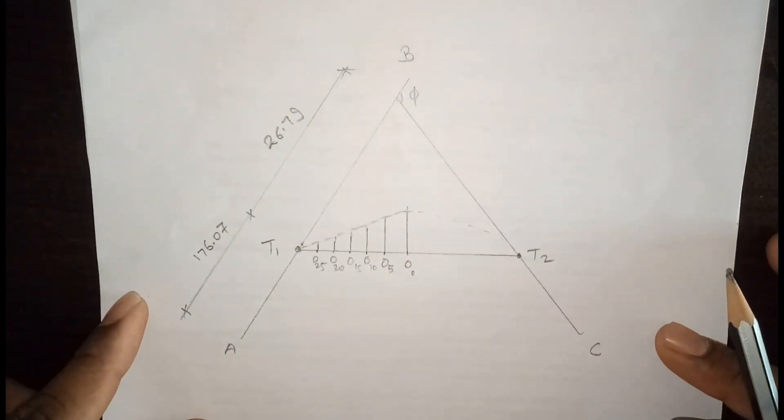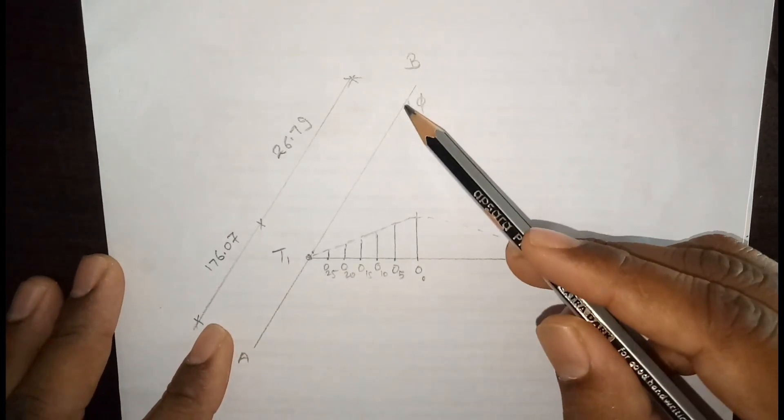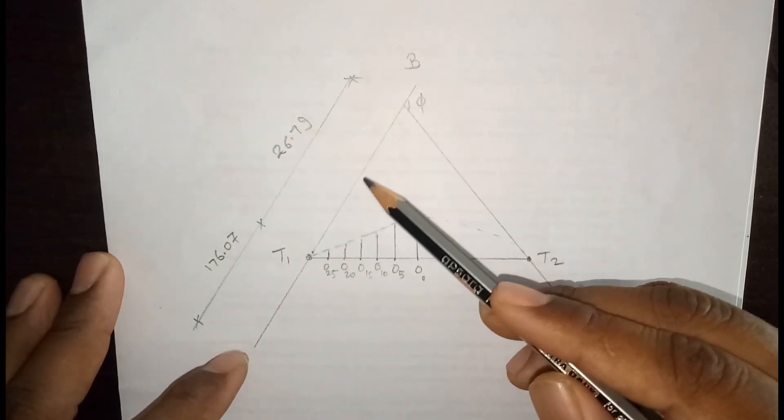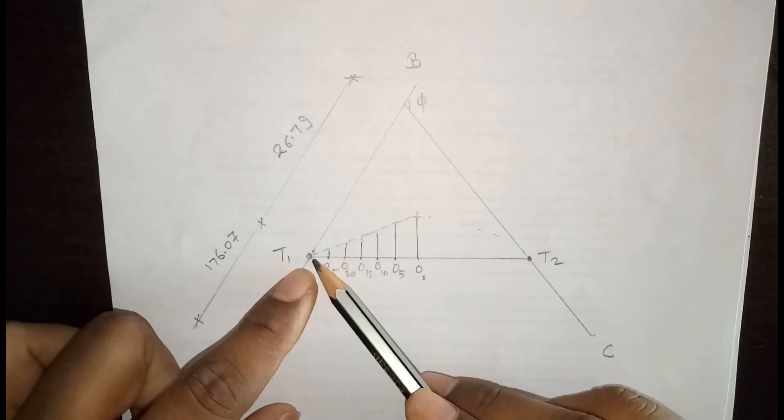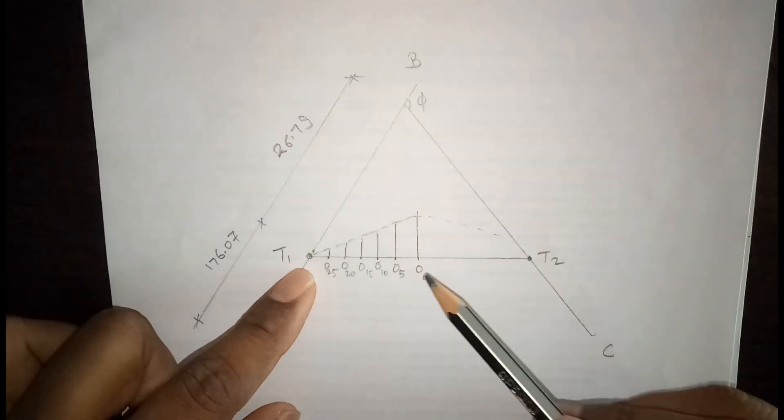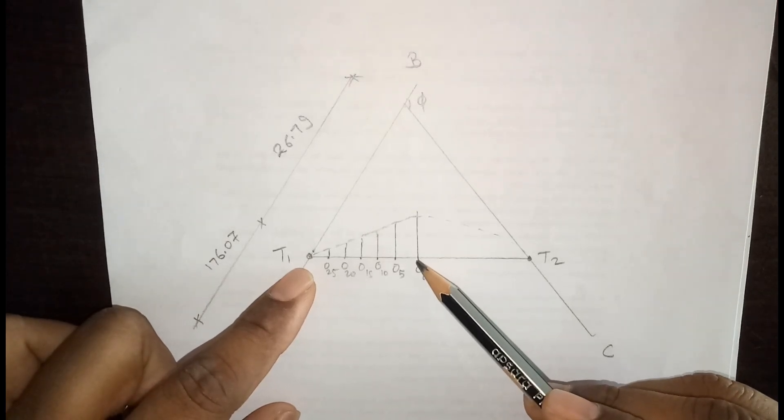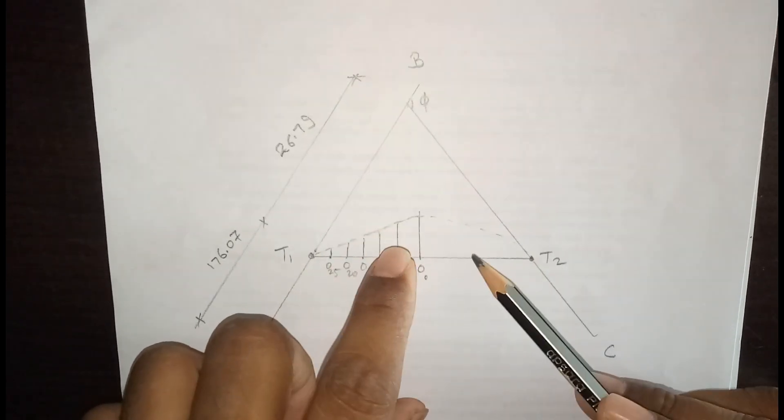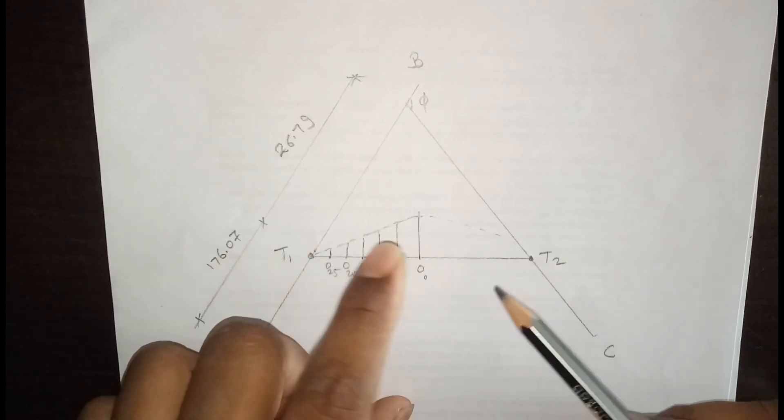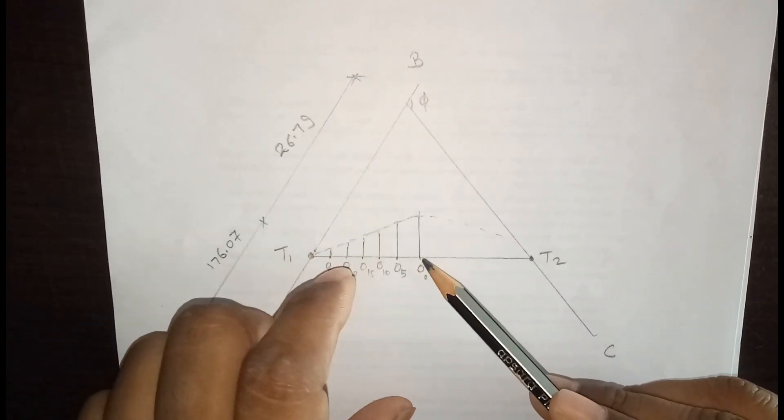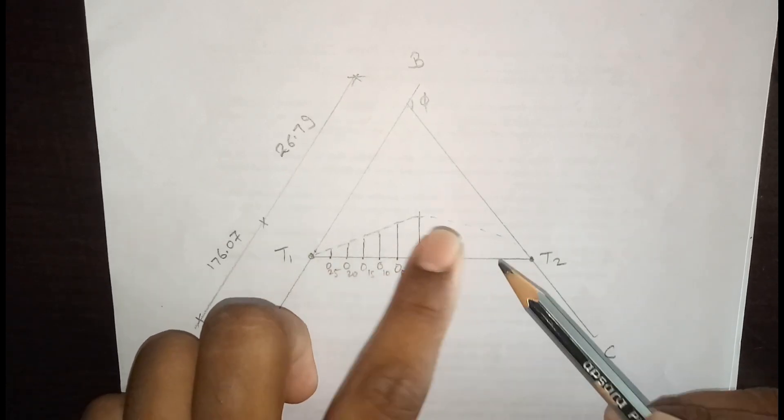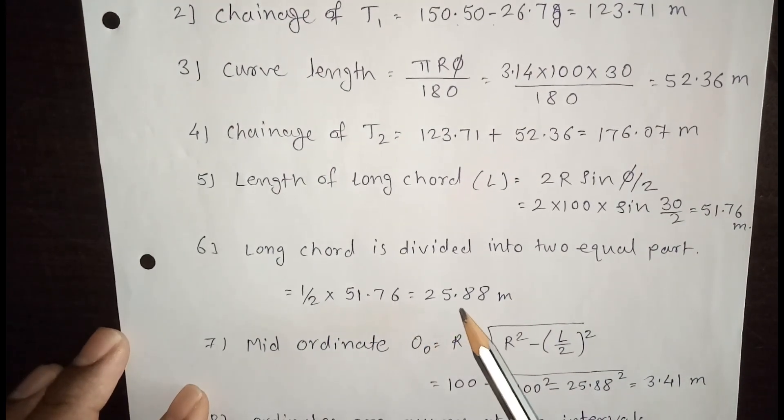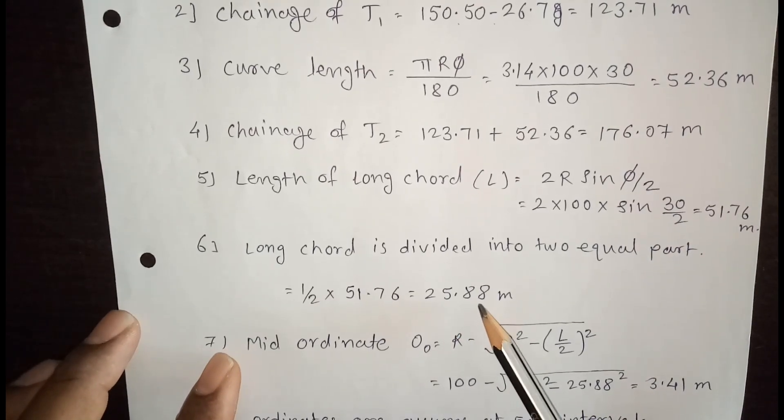Now why? Because see here. This is the curve. This is the point of intersection that is B. This is T1, T2. This is tangent length. Now this is the length of long chord. This length of long chord is divided by 2 or make half. Why? Because we have to design half curve. And half curve will be the mirror image of this curve. So we need not to design other half part. Only we have to consider half part and we have to design that part. The same will be carried forward here. That's why divided by 2. That is then long chord divided by 2 is 25.88. So we have to design this 25.88 meter.